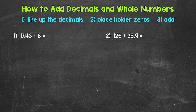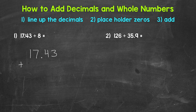Let's jump into number one, where we have 17 and 43 hundredths plus 8. Let's set this problem up by lining up the decimals. How do we line up the decimal for our whole number 8? Remember, decimals come after a whole number — after the ones place. So the decimal is right here for 8. Our decimals are now lined up and our problem is set up.